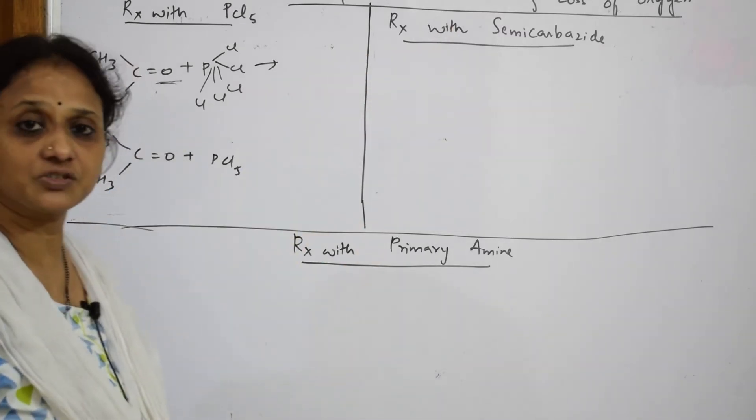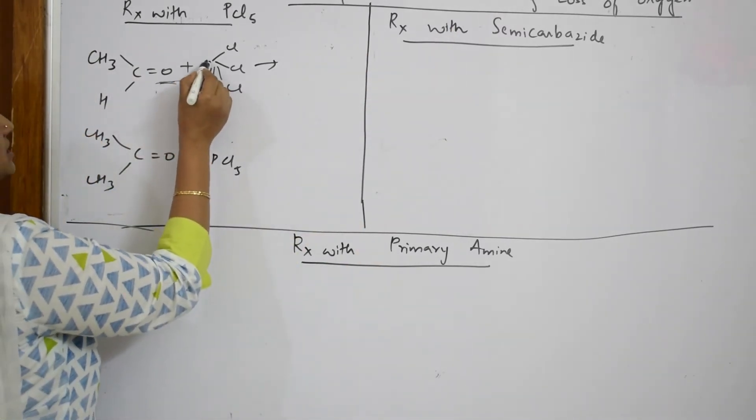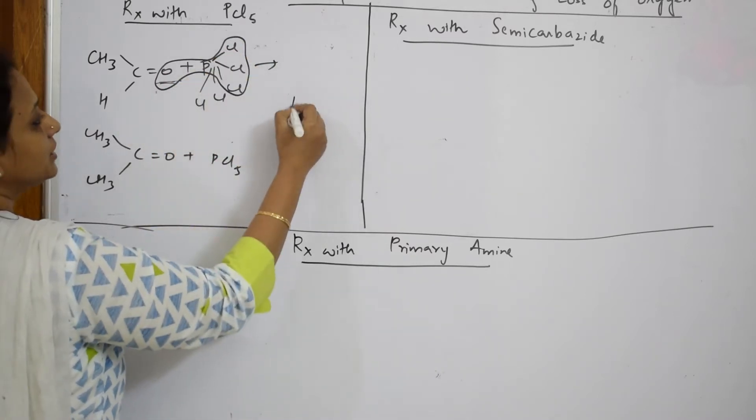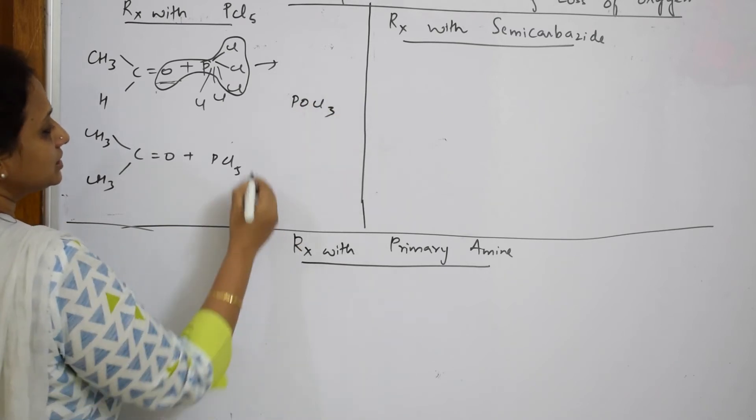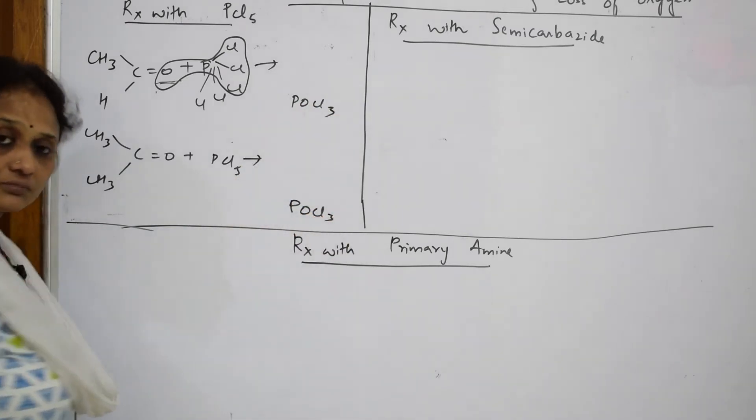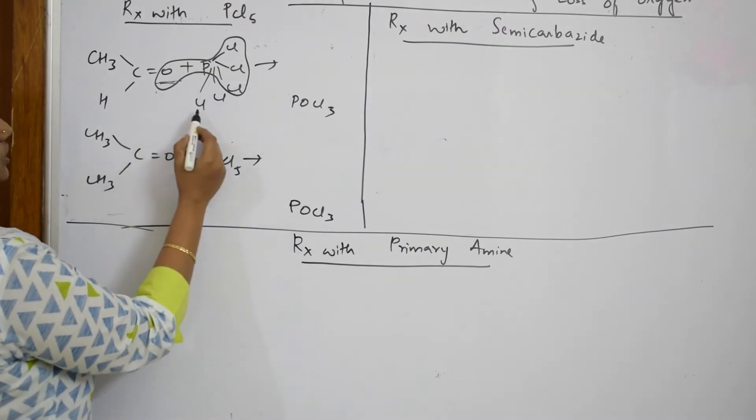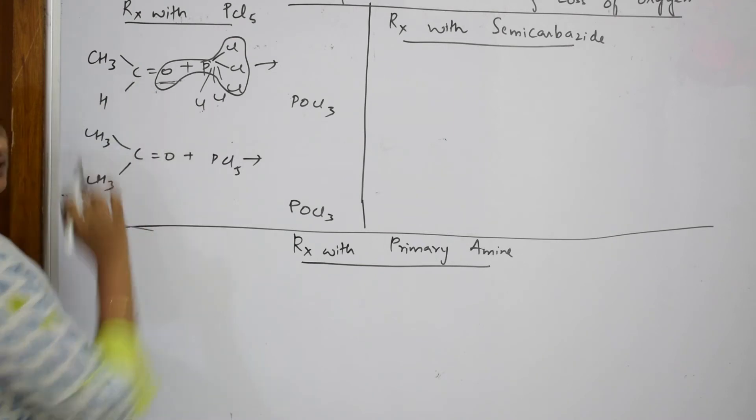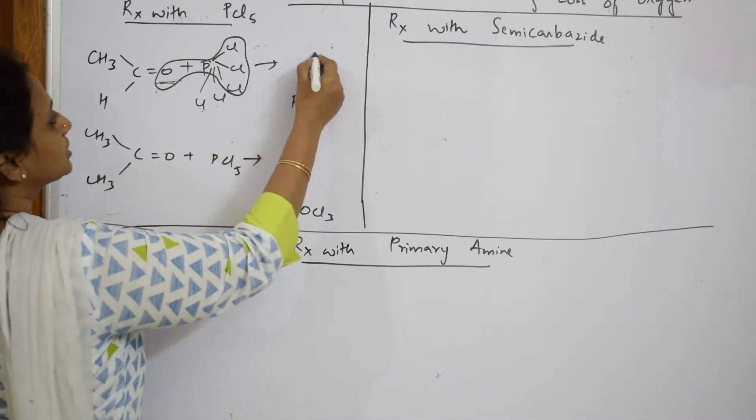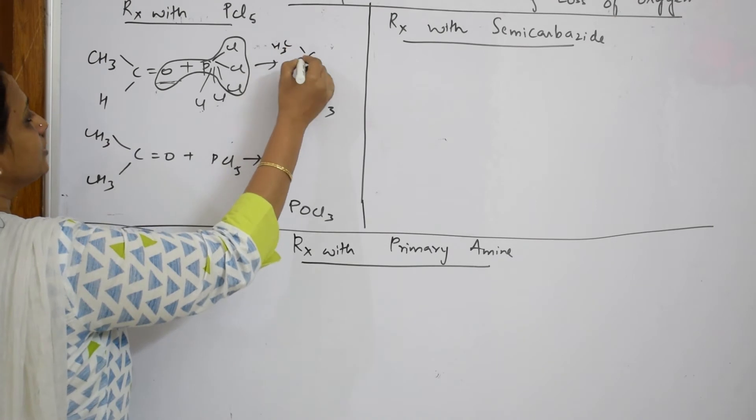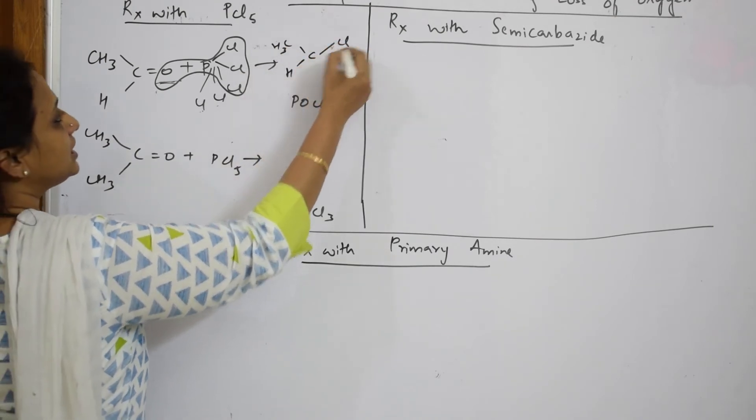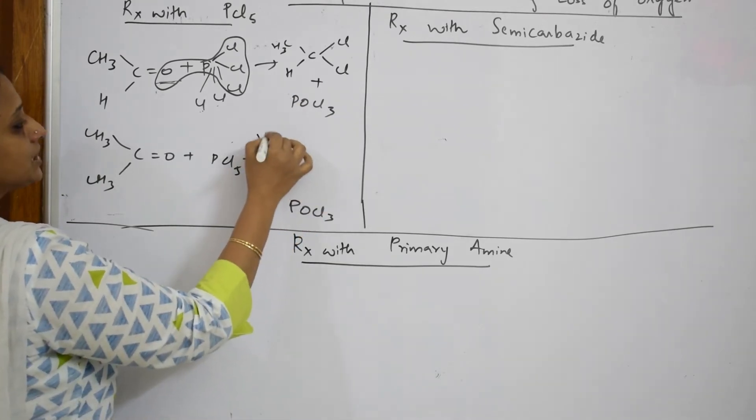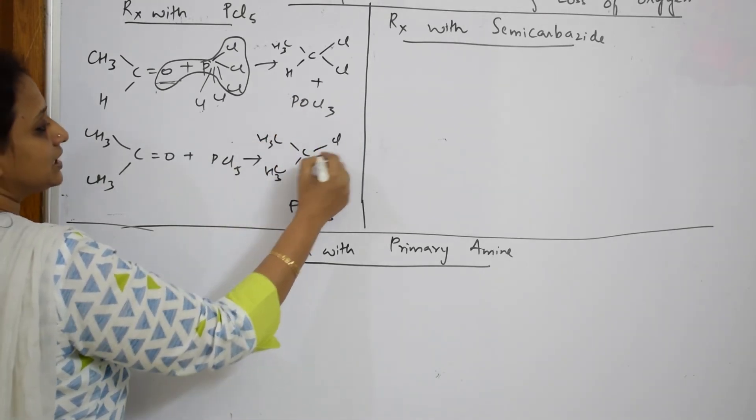Observe, this comes out as POCl3. First important thing is it comes out as POCl3 in both cases. Now what else is left? You are left with only two chlorines. These two chlorines are going to go and attach to this carbon. How does this look? Carbon, your CH3, your H, Cl and Cl. Here also same thing: C, CH3, your CH3, your Cl and Cl.